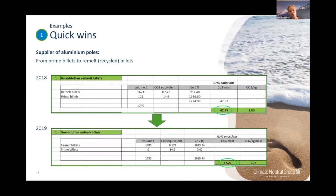An example of a quick win: moving from the bananas to aluminum poles. A client had only prime billets, resulting in a net footprint of 42.87. They moved to remelt recycled billets — the emission factor is a lot lower. With almost the same volume, this resulted in a decrease of their footprint from 42.87 to 17.26 just by procuring different raw material. That's substantial.